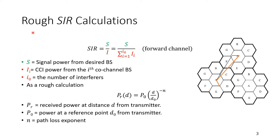We can define the signal-to-interference ratio (SIR) as the signal power divided by the interference power. Note we used SNR (signal-to-noise ratio) or SINR (signal-to-interference-and-noise ratio) before, but here interference is more dominant than noise so we focus on SIR. The signal power is shown in green and interference power in red. For the forward channel we have one received signal and interference from all surrounding cells — six interferers for hexagonal cells with a frequency reuse factor of 1/7.